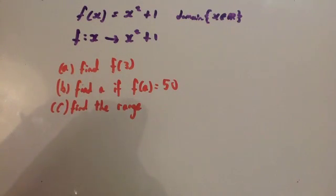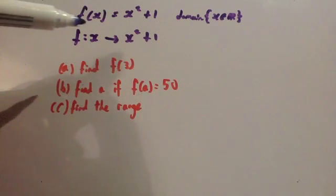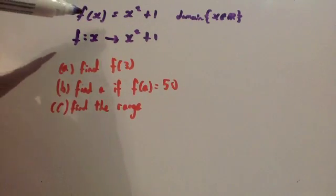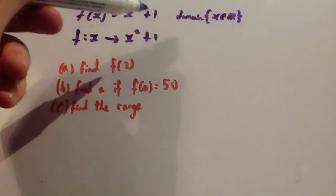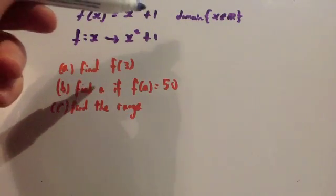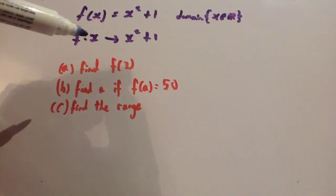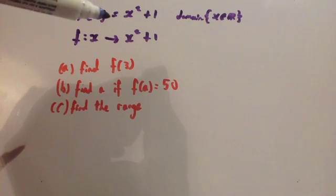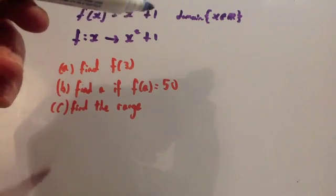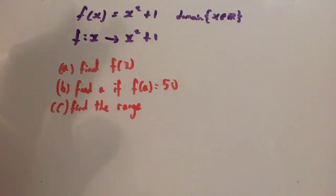In this video we're going to be looking at functions and different types of questions you might get about them, and different things about notation. I've listed two different ways a function can be written. The first one is f(x) = x² + 1. This is another way of writing exactly the same thing: f: x → x² + 1. These functions are exactly the same — it's just saying you're going to square the values and add 1. The domain for these is x belonging to the set of real numbers, so we're going to put in every single value of x.